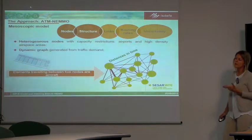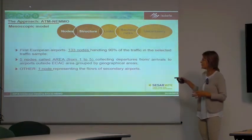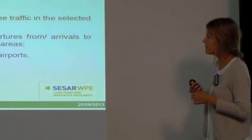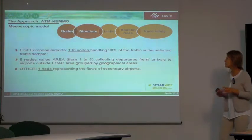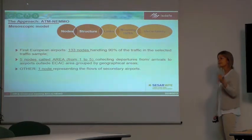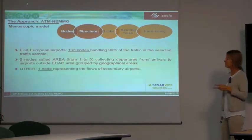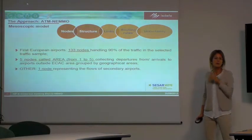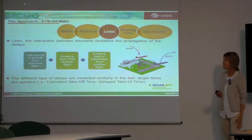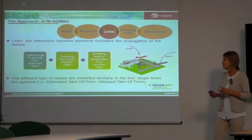We assume free routing with distances measured in time. The model represents 133 nodes — the top European airports handling 90% of traffic in the 2012 sample — plus five area nodes for flights arriving from outside the ECAC area and one 'other' node for secondary airport flows. For each flight in the traffic sample we identify linked flights and the number of links, since a link between two flights facilitates delay propagation.